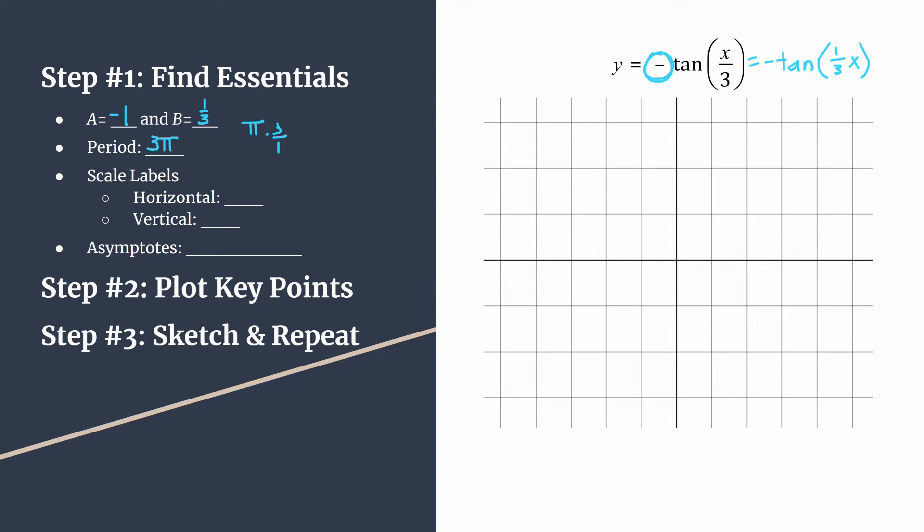Now we can find our scale labels. Remember to set the horizontal scale, we want to take the period, which is just the length of a horizontal cycle and divide it into four equal pieces. So in this case, three pi divided by four will be what we count by to label the tick marks of our horizontal scale. And then our vertical scale labels are determined by A. A is negative one. So we just take the absolute value of that and we'll count by ones for our vertical axis labels.